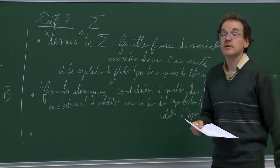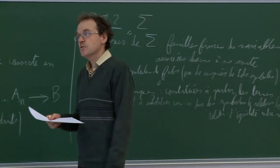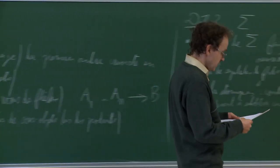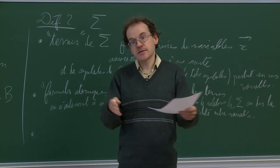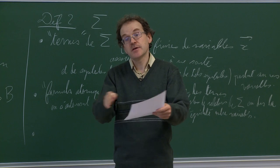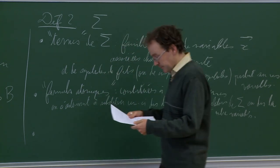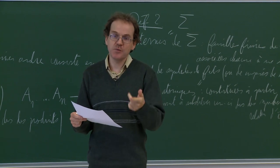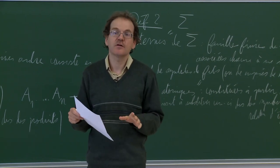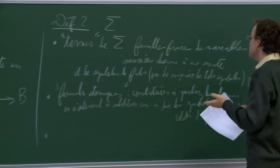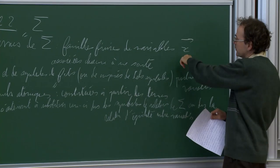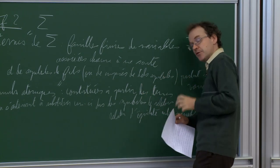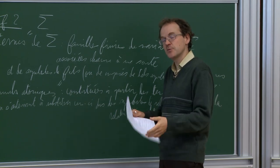For example, if you have two functions f and f' going to the same sort, then f equals f' is an atomic formula in the language sigma. The equality relation requires terms of the same sort. We have an infinite stock of variables from which we draw to write formulas, and we will see what we call a context in which a formula can be written.